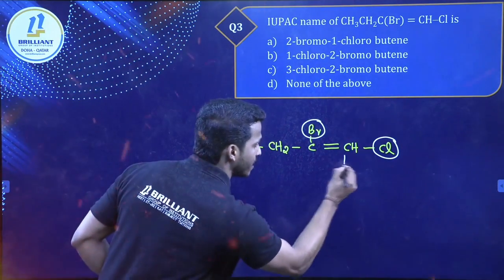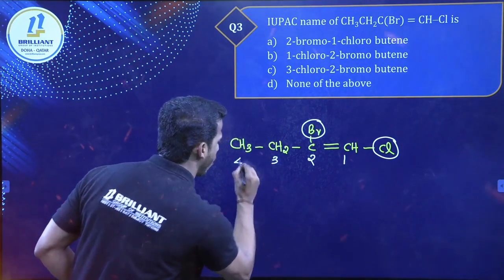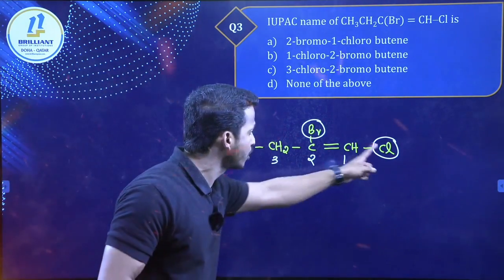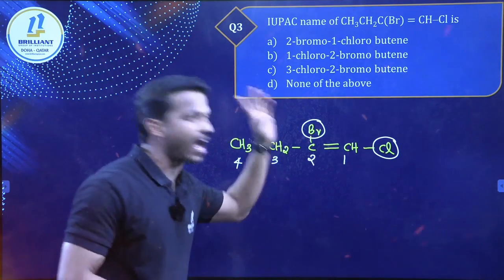So we have to start numbering from this side: one, two, three, four. So two bromo, second position bromine is there. First position, chlorine is there. First position, alkyl is there.